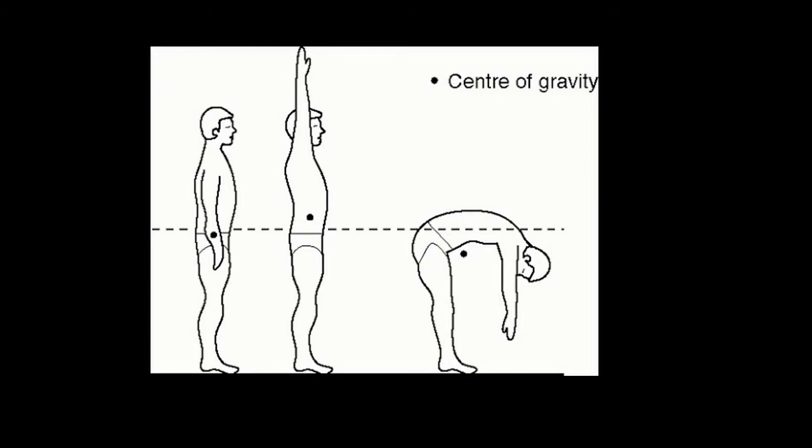So here's a guy standing. In a normal person, the centre of gravity is just in front of your second sacral vertebra. If you lift your arms up, it goes up slightly. And if you bend forwards, your centre of gravity actually falls outside your body.